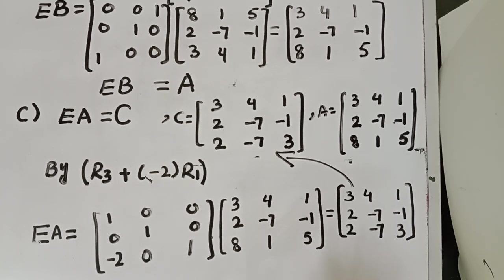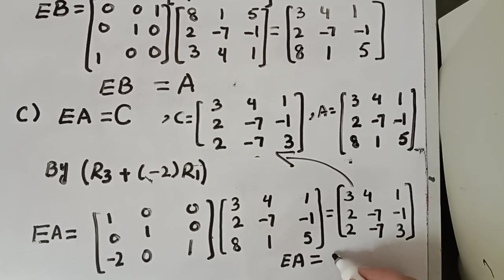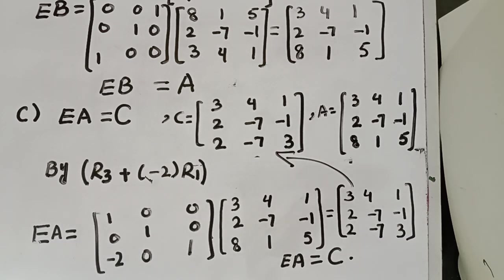So, this product EA is verified — hence this product gives matrix C. Next, let's move on to part D.